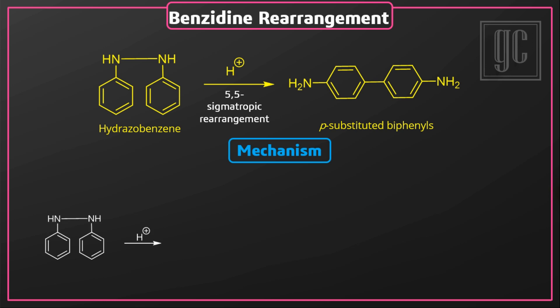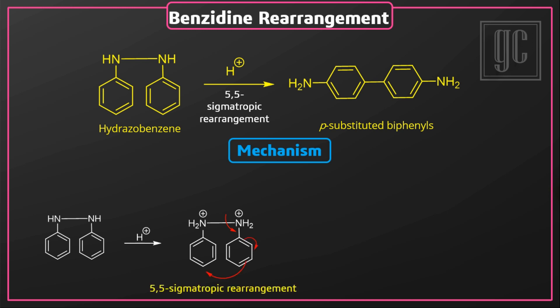In the presence of acid or acidic conditions, the amine groups of hydrazobenzene get protonated. Because of that, the nitrogen-nitrogen bond becomes unstable and breaks. The bonding electrons move toward the benzene rings and a [5,5]-sigmatropic shift takes place, forming an intermediate.